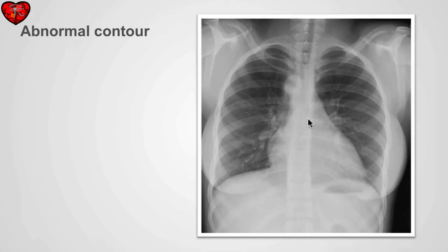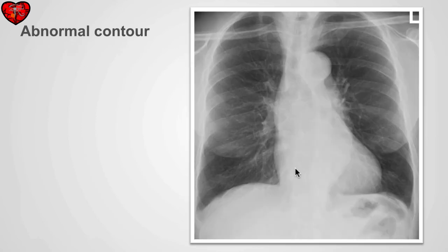In this case, we see an abnormal contour on the right. Instead of only having the superior vena cava superiorly, we see an additional contour caused by a right-sided aortic arch, which represents a normal variant in this patient. In another case, the right heart border is abnormal because of a dilated ascending aorta, giving a contour on the right that is normally not identified.